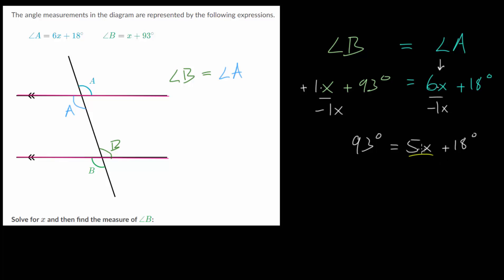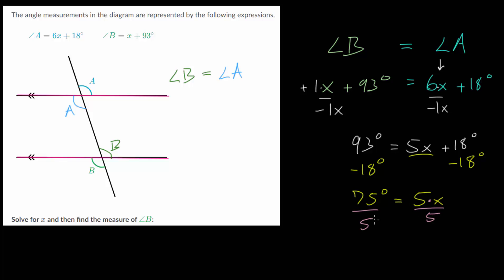From here we have a two-step equation. We want to get x by itself, so we'll cancel out addition first by subtracting 18 degrees on each side. Taking away 10 brings us to 83, taking away 8 more brings us to 75. So 75 degrees equals 5x. Lastly, we cancel out the multiplication by dividing each side by 5. 75 divided by 5 is 15, so x equals 15 degrees.